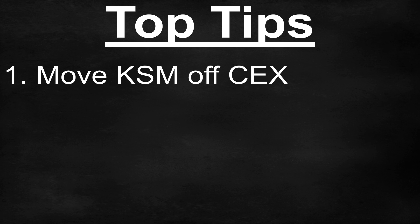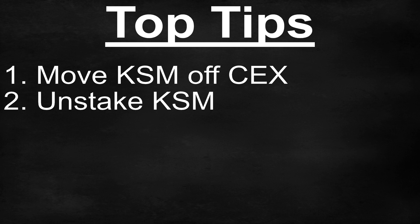The next thing you need to do is: if you are currently staking your KSM in a validator node on the relay chain, you need to immediately unstake your KSM, because the unstaking process takes seven days. You will not be able to use those KSM tokens for seven days in the crowdloans because they will be locked up during this unstaking process.